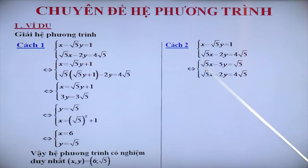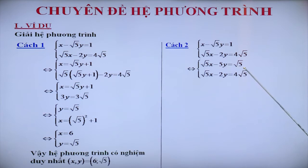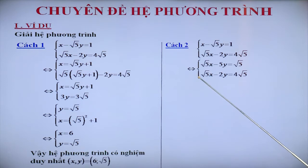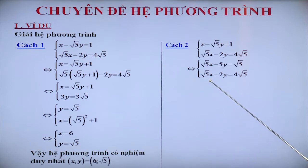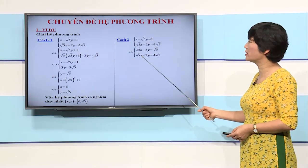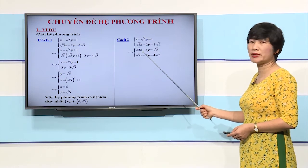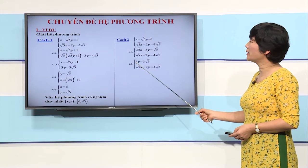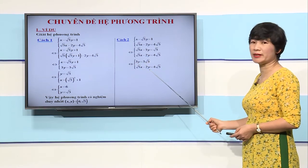Cô được hệ phương trình: căn 5 X trừ 5Y bằng căn 5; căn 5 X trừ 2Y bằng 4 căn 5. Khi này, cả 2 phương trình đều có hạng tử giống nhau là căn 5 X. Để cho hệ số của ẩn Y là số dương, cô trừ vế cho vế của phương trình thứ 2 cho phương trình thứ nhất để thu được phương trình một ẩn: 3Y bằng 3 căn 5, và giữ nguyên phương trình thứ 2.